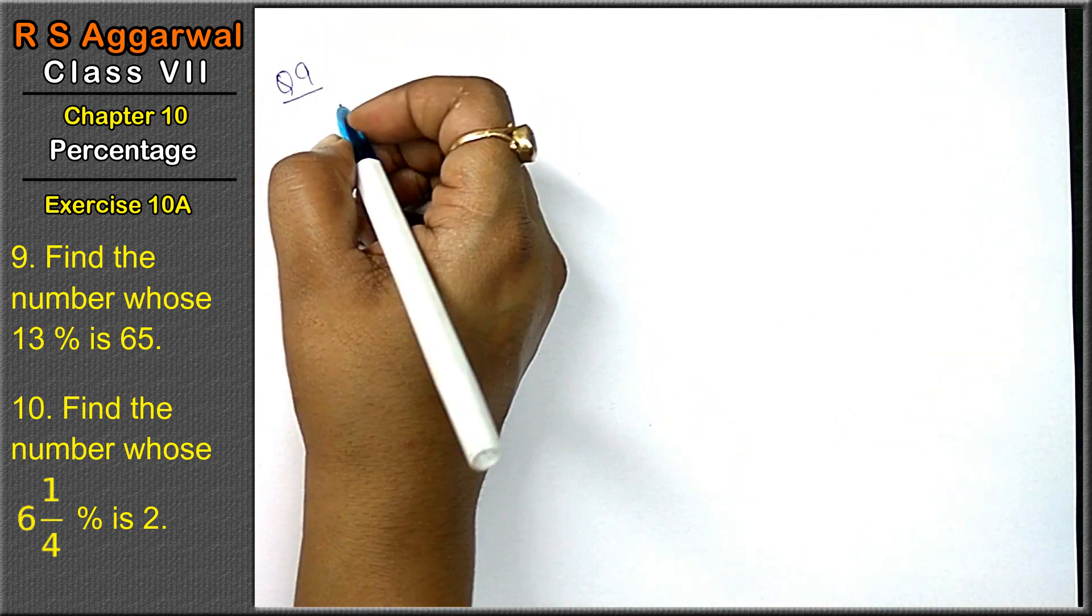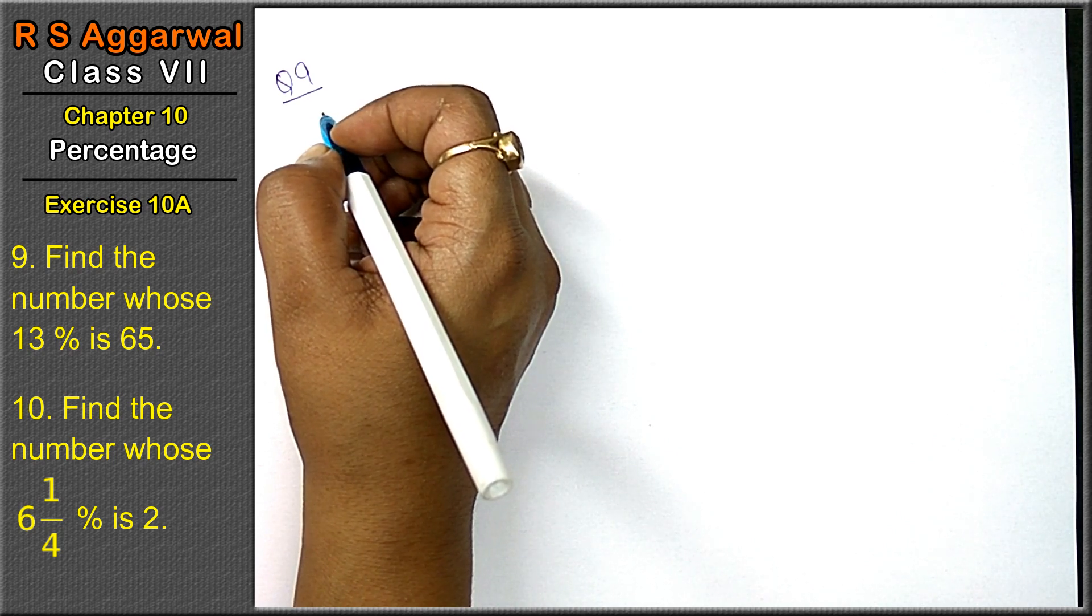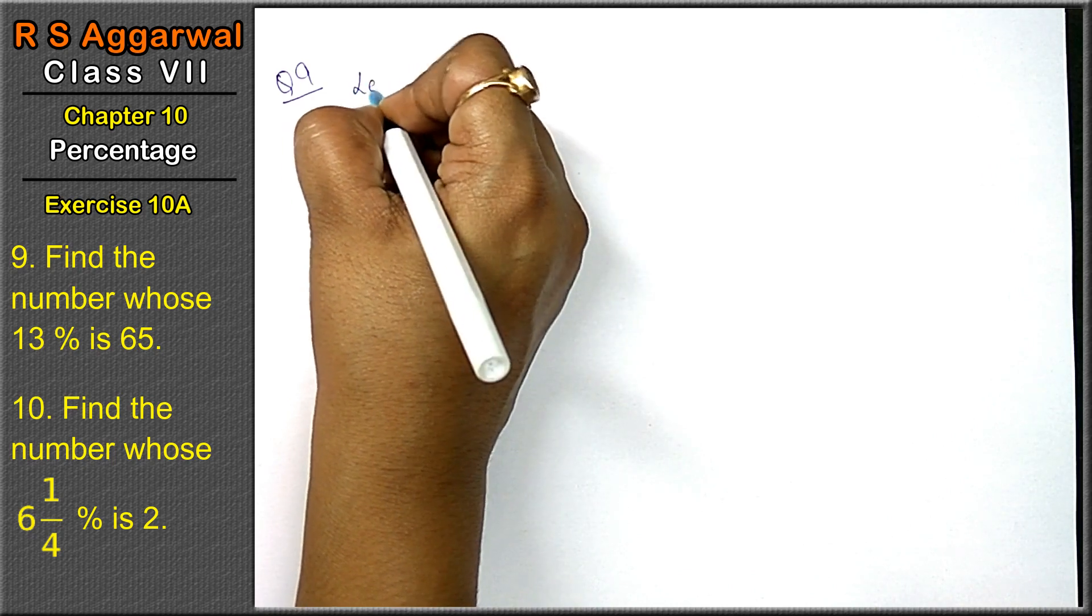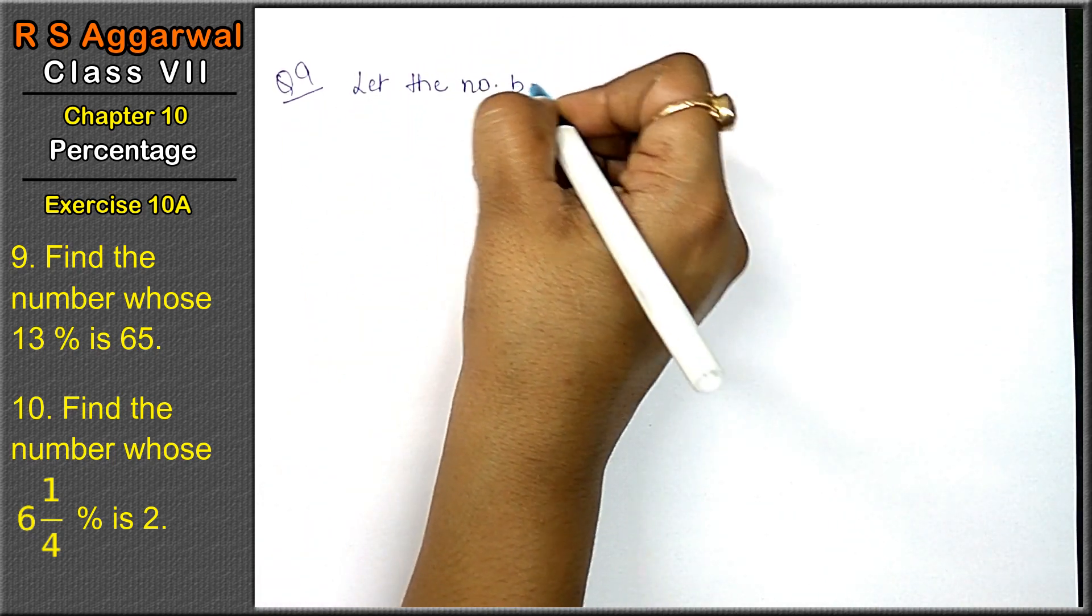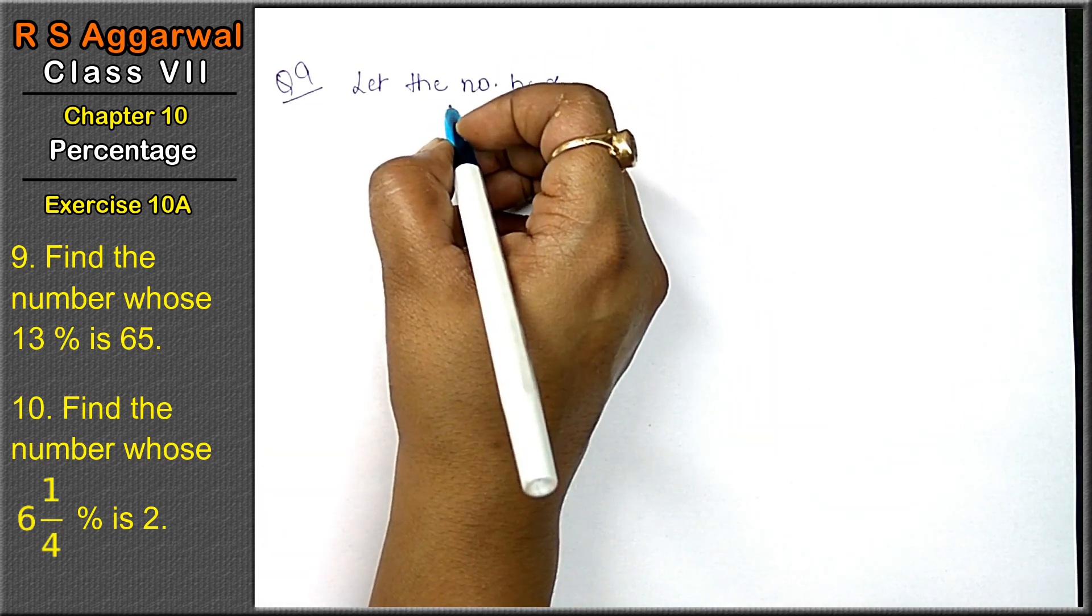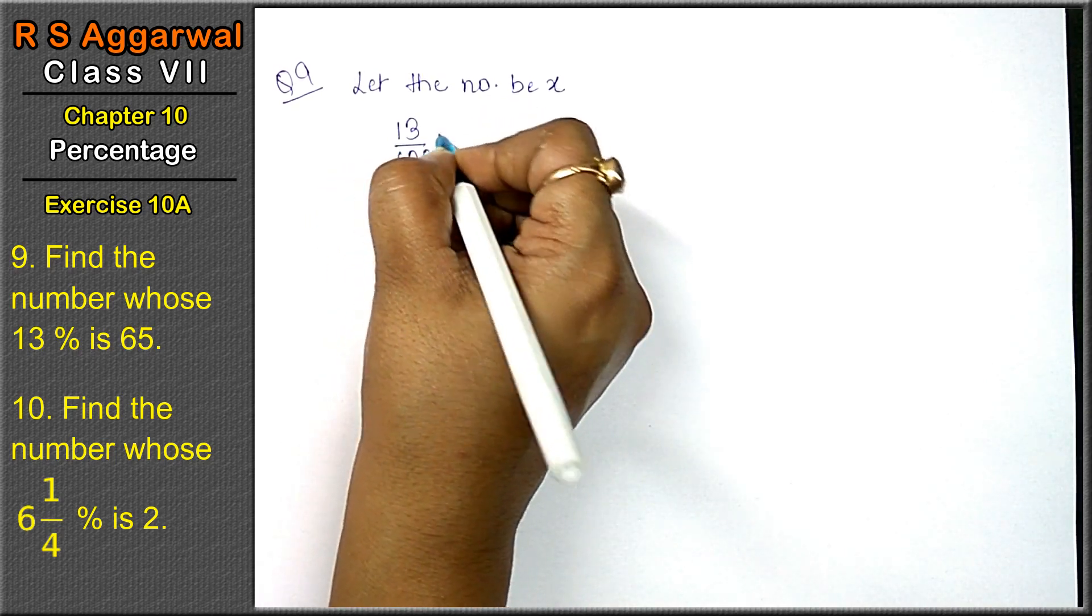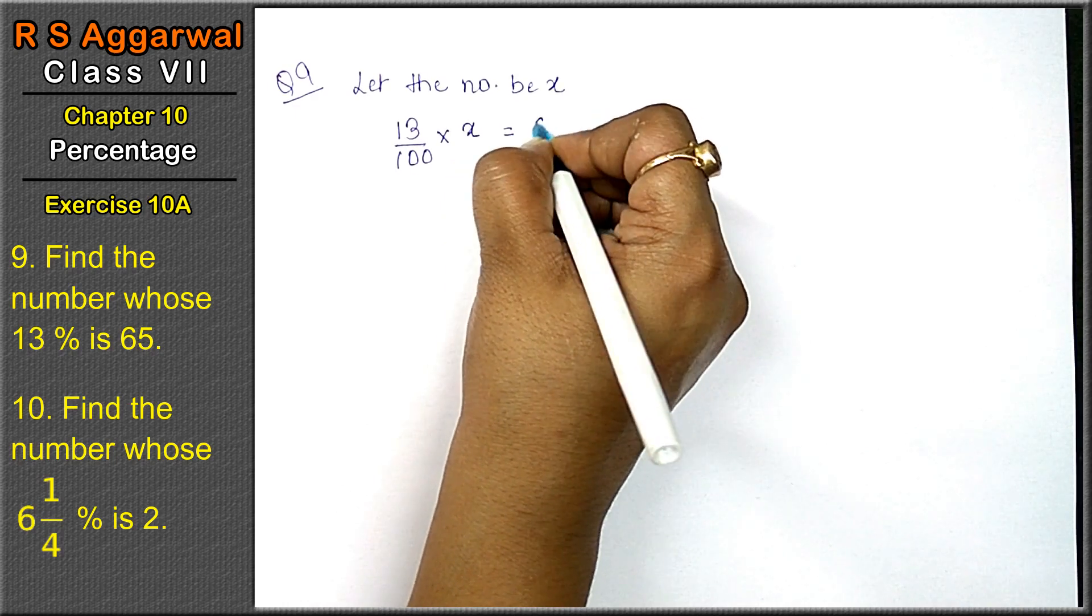Question number 9 is find the number whose 13% is 65. The number is not given, so let the number be x. Then find the number whose 13% of that number, that means x's 13% is 65.